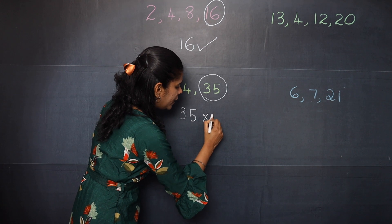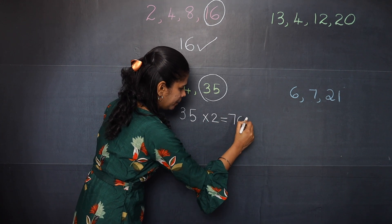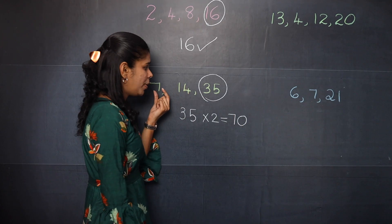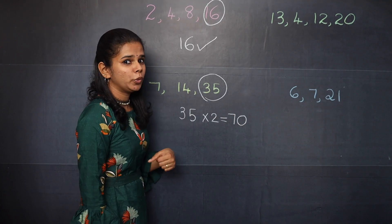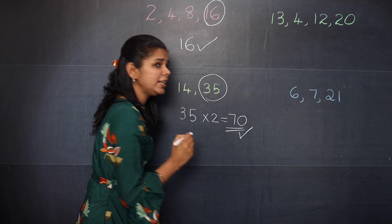You should multiply the bigger number by 2. So you will get 70. Now you should check whether 70 is divisible by 7 and 40. You can see it is divisible. So you can confirm that 70 is your LCM.